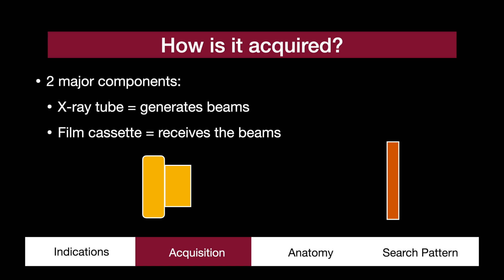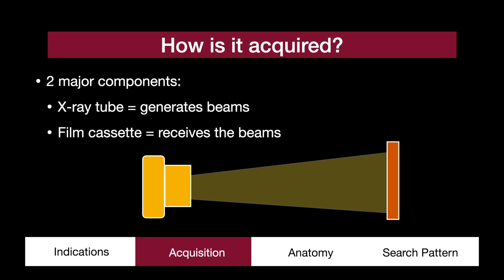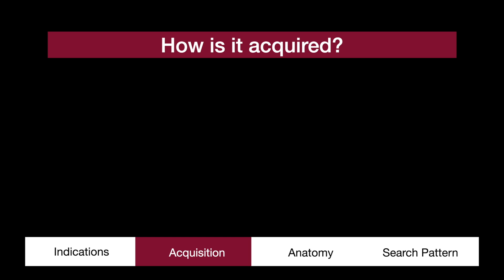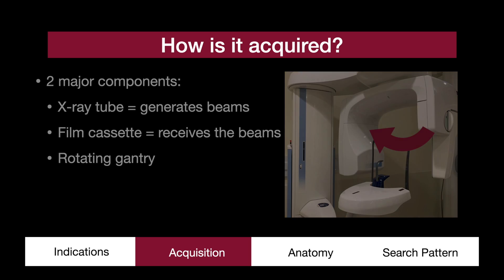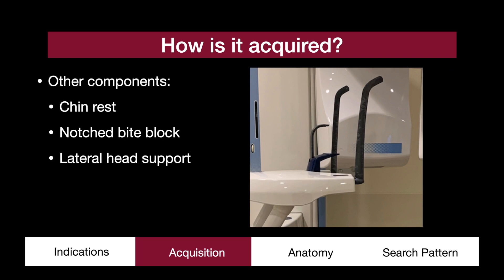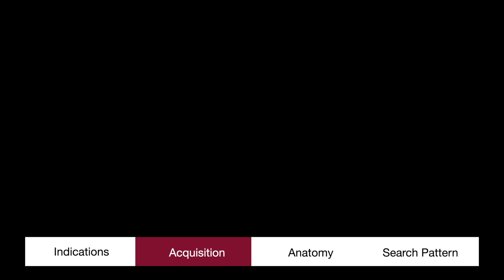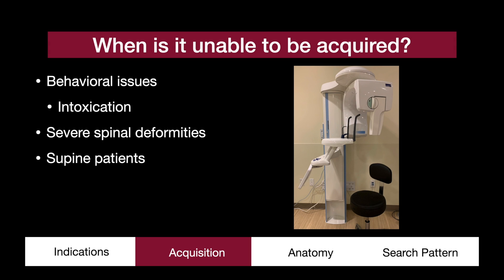Let's discuss how a panorex is acquired. Like any x-ray modality, there are two components: the tube generates beams, while the cassette receives those beams. The difference with a dental panorex is the presence of a gantry, which rotates about the patient's head. Other components include a chin rest, a notched block where the front teeth bite onto, and lateral head support. Not all patients may be amenable to this setup.